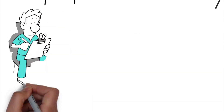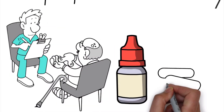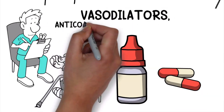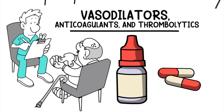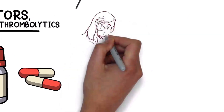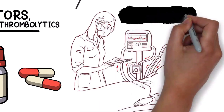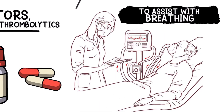Certain medications may be administered for the treatment of a stroke, including vasodilators, anticoagulants, and thrombolytics. In some cases, the patient may require intubation and mechanical ventilation to assist with breathing.